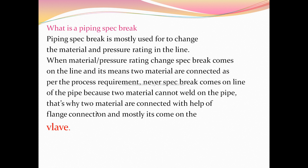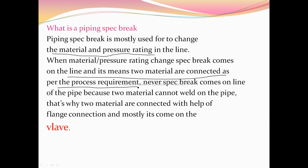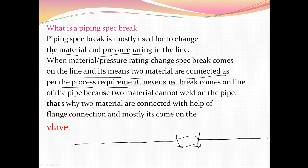Now, what is a piping spec break? The main thing to understand is how the spec break comes in the line. A piping spec break is mostly used to change the material or the pressure rating. For example, if a line starts with SS (stainless steel) material and then needs to change to CS (carbon steel), a spec break is required at that point. When the material or pressure rating changes, the spec break comes on the line, connecting two materials as per the process requirement.